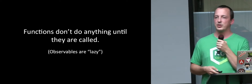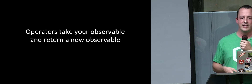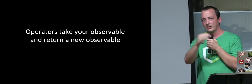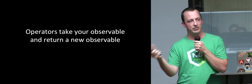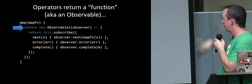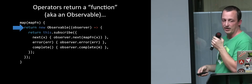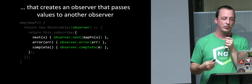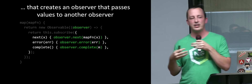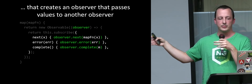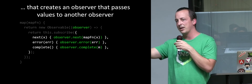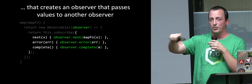The important thing to remember is it's really just a function. Observables are just a function. If someone hands you an observable, it is not doing anything until you subscribe to it. Even if it's a hot observable, the hot stuff is happening outside the observable — the observable itself is a function that connects your observer to something providing values. Think of them as functions, that's all they are. Observables are lazy — they don't do anything until they're called. Operators take your observable and return a new observable.